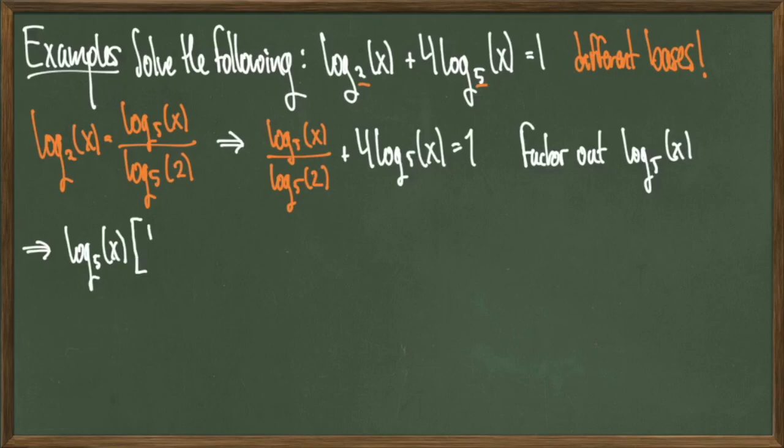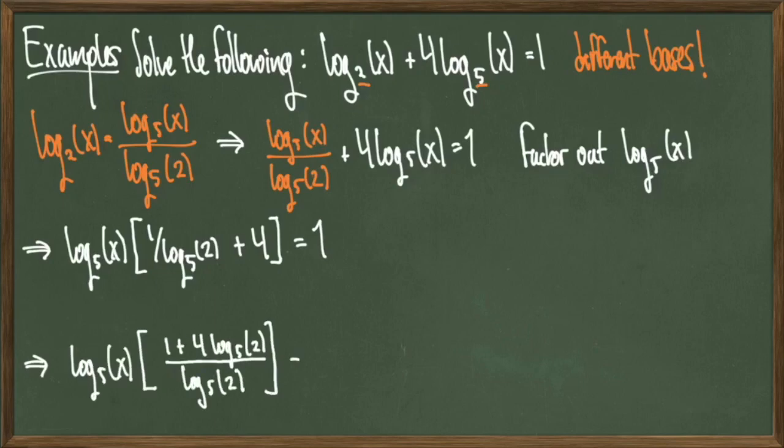Now to solve, the first thing we'll do is factor out log₅(x), leaving behind 1/log₅(2) + 4 = 1. Now I'll simplify the inside, making it all one big fraction, to get log₅(x) × (1 + 4log₅(2))/log₅(2) = 1.